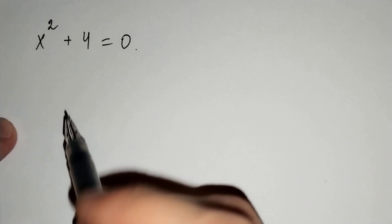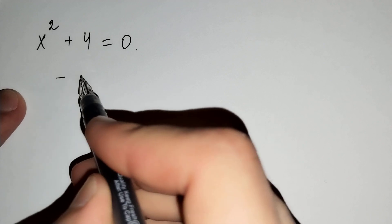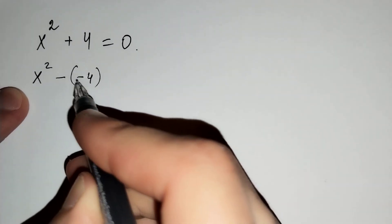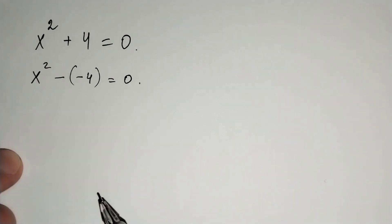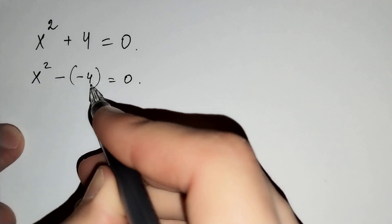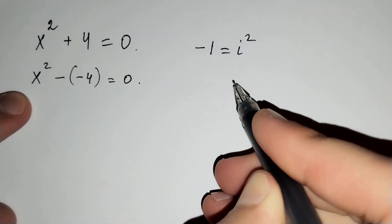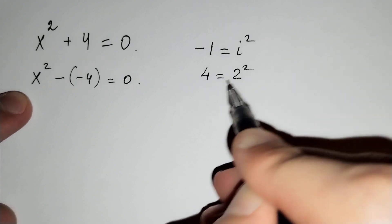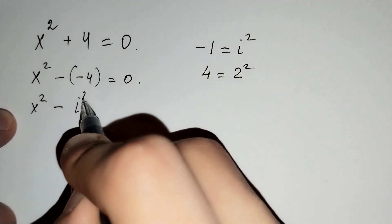Now let's begin. We rewrite: 4 equals negative of minus 4, so x squared minus minus 4 equals 0. We know from complex numbers that minus 1 equals i squared, and 4 equals 2 squared. So we substitute: x squared minus i squared times 2 squared equals 0.